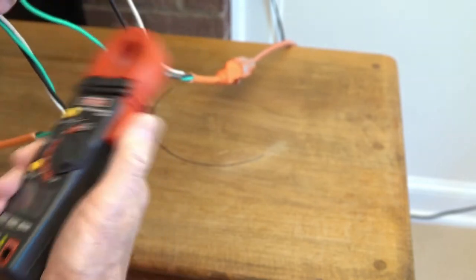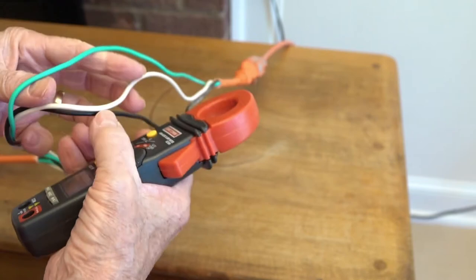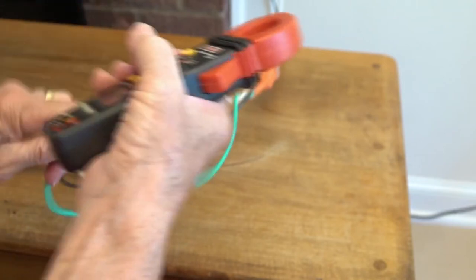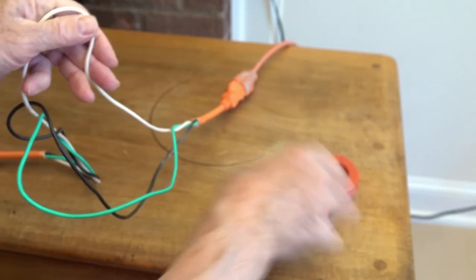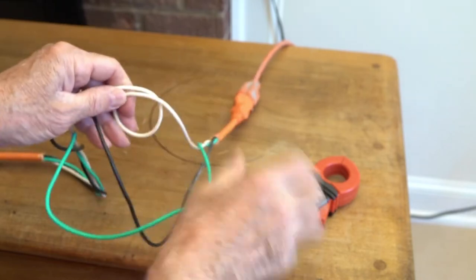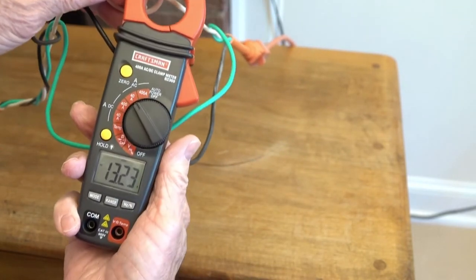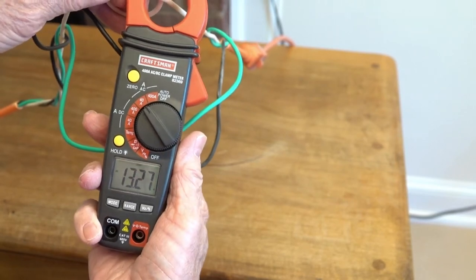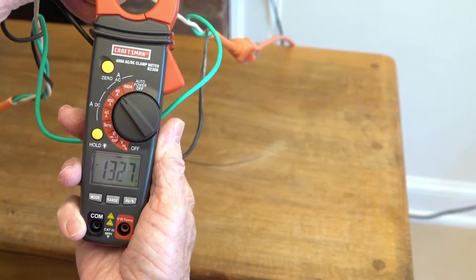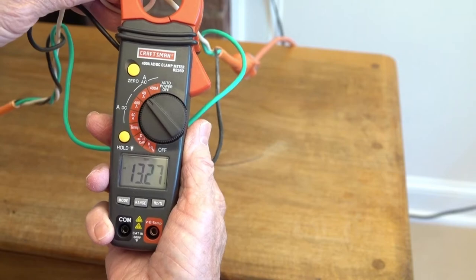So, now if you take any one of these leads. We'll just use the neutral here. It doesn't matter which one. We'll kind of double it over like that and measure it. We have 13.27. Hopefully you can see that. So it basically doubles it.